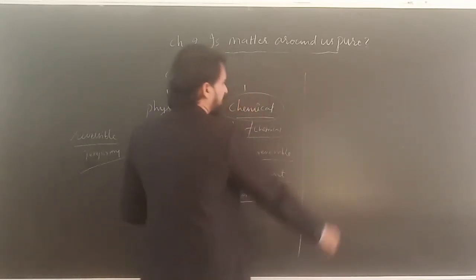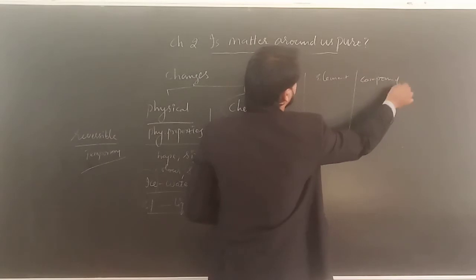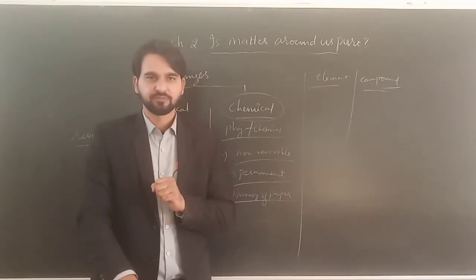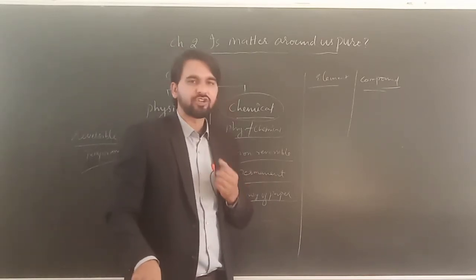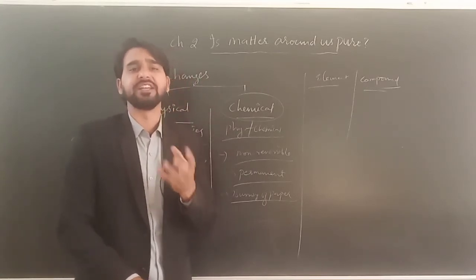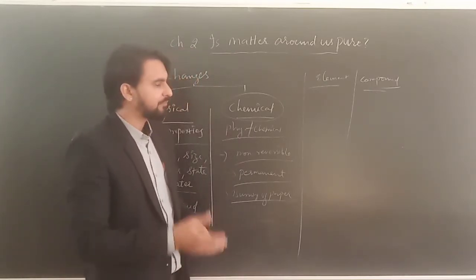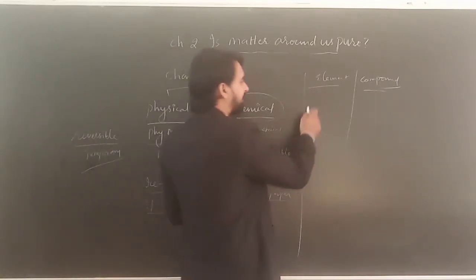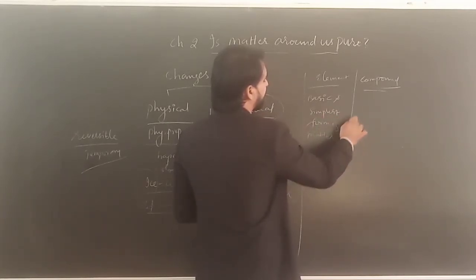Now let us differentiate between element and compound. A pure substance is one made up of only one type of particle, and an impure substance is made up of more than one type of particle. When we define an element, it is the very basic and simplest form of matter which cannot be further subdivided — it is the finest atomic part.